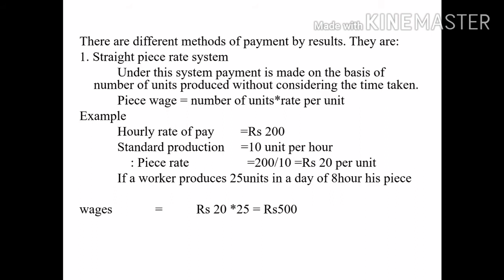There are three different methods of payment by result. The first one is the straight piece rate system. The second one is piece rate with a guaranteed time rate. And the third one is differential piece rate. These are the three important methods of piece rate system.